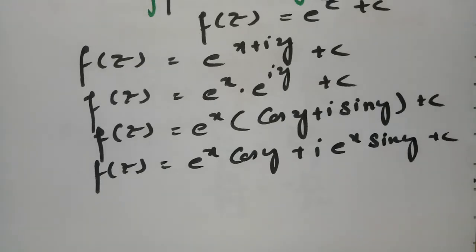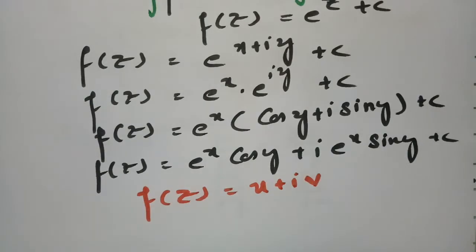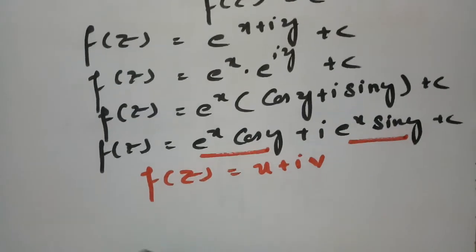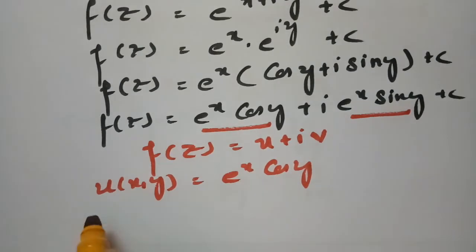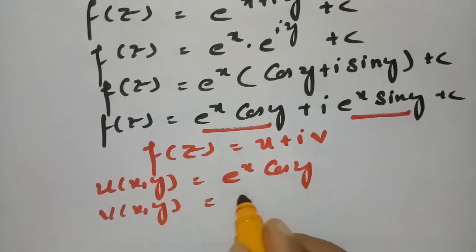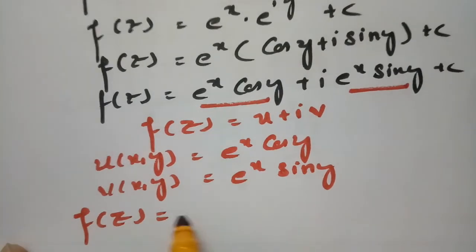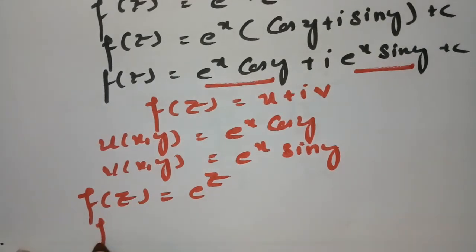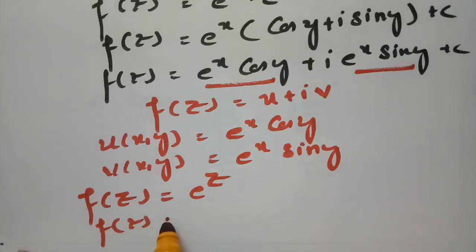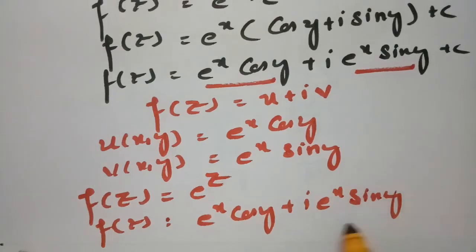Since f(z) = u + iv, comparing real and imaginary parts: u(x, y) = eˣ cos(y) and the harmonic conjugate v(x, y) = eˣ sin(y). The analytic function f(z) = eᶻ, or in terms of x and y: f(z) = eˣ cos(y) + i·eˣ sin(y). This is how we solve using the Milne-Thomson method.